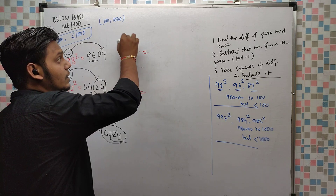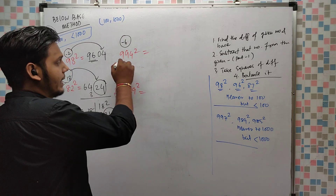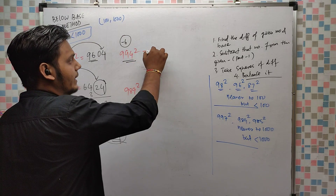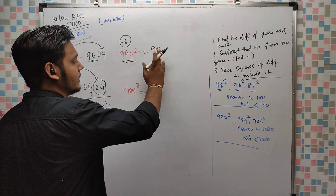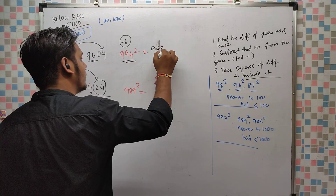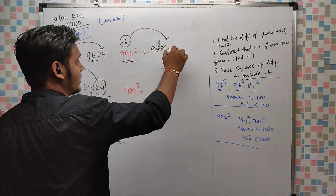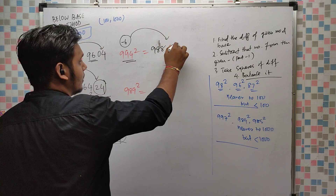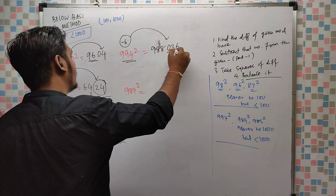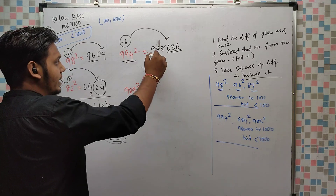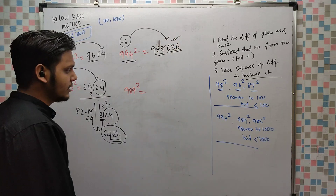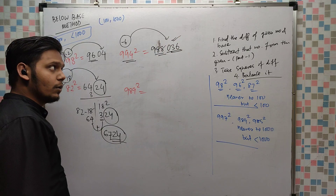For 994²: 994 is 6 less than the base 1000. So 994 minus 6 is 988, and 6² is 36. But base is 1000 so we need 3 digits in part 2: 036. The answer is 988036.